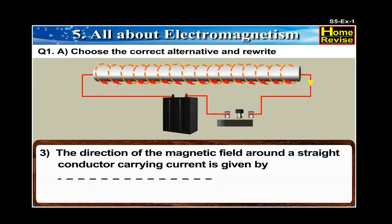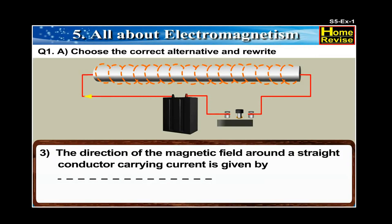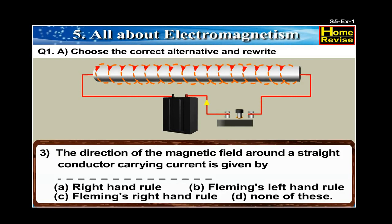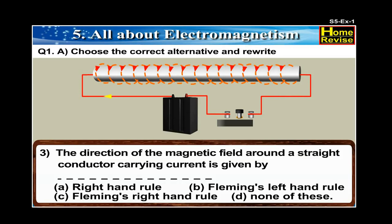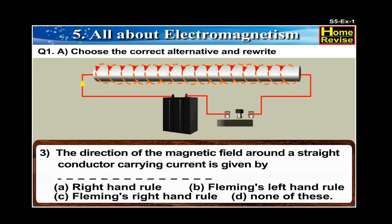3. The direction of the magnetic field around a straight conductor carrying current is given by dash. A. Right hand rule. B. Fleming's left hand rule. C. Fleming's right hand rule. D. None of these. The answer is: The direction of the magnetic field around a straight conductor carrying current is given by Fleming's right hand rule.